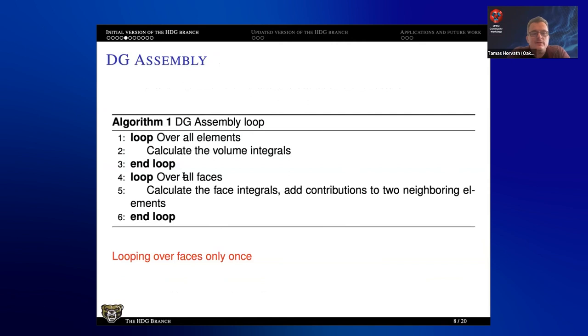And in the regular DG assembly, what do we do? We loop over all the elements, calculate certain volume integrals, and loop over all the faces and calculate certain face integrals. And if it's an interior face, add the contribution to the two neighboring elements. So the nice part is that we loop over the faces only once, because we do separate the loop over the elements and the loop over the faces.